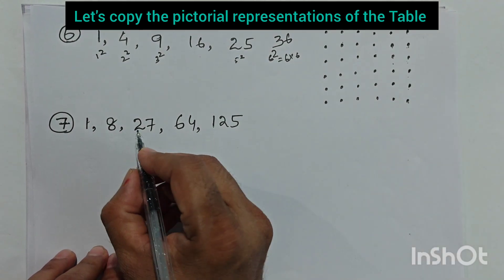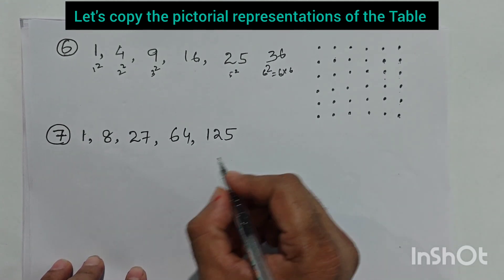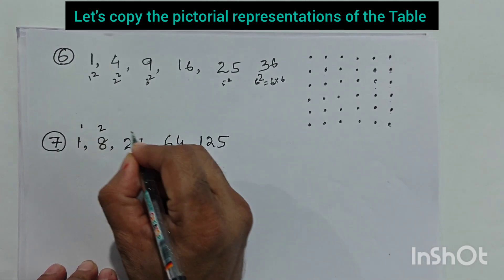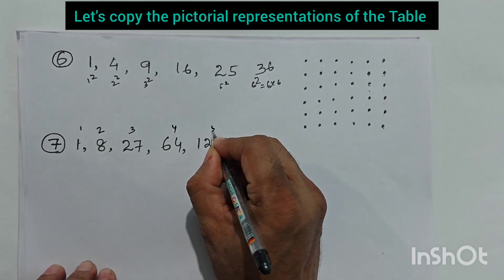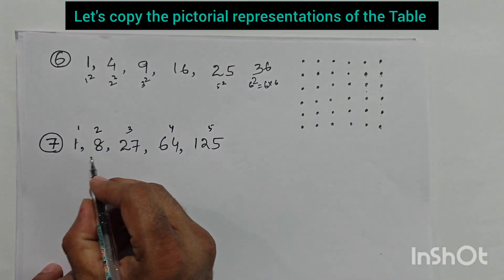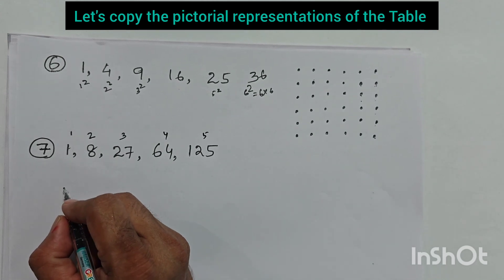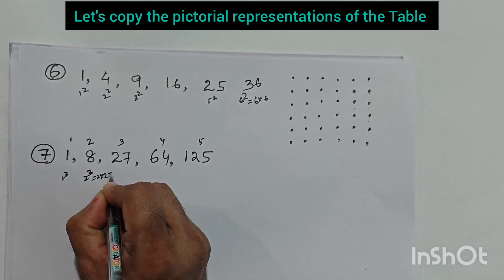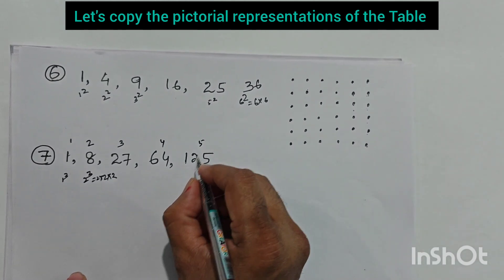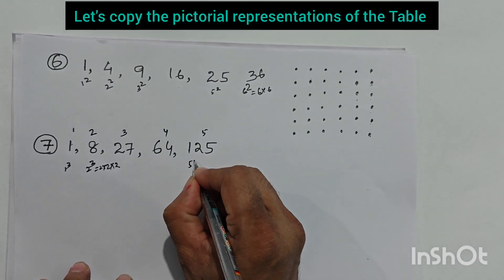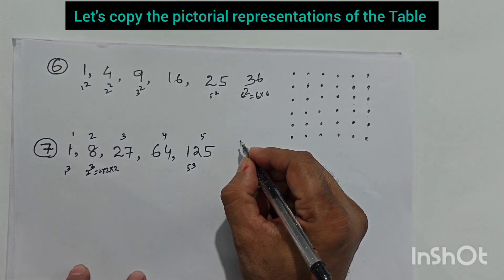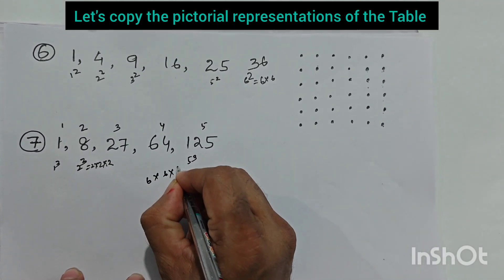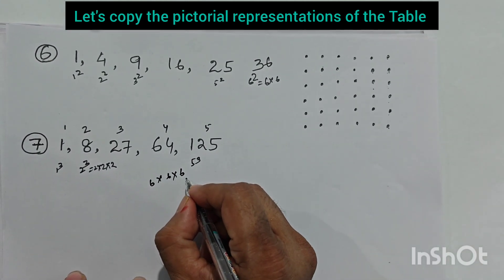The cube numbers are 1, 8, 27, 64, 125. These are formed by cubing the position number. Position one gives 1³=1, position two gives 2³=8, position five gives 5³=125. The next number is at position six: 6³ = 6×6×6 = 216.